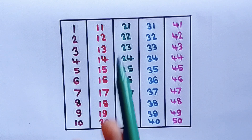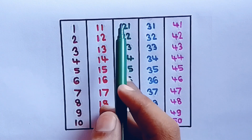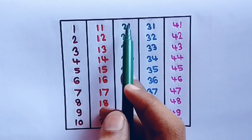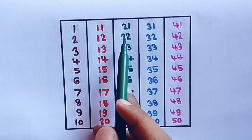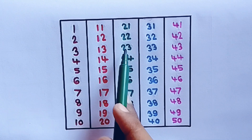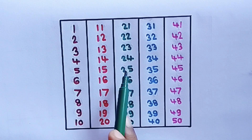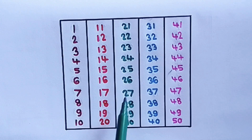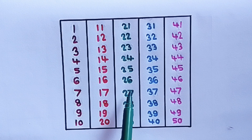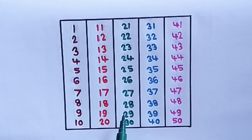Green color: 21, 22, 23, 24, 25, 26, 27, 28, 29, 30.